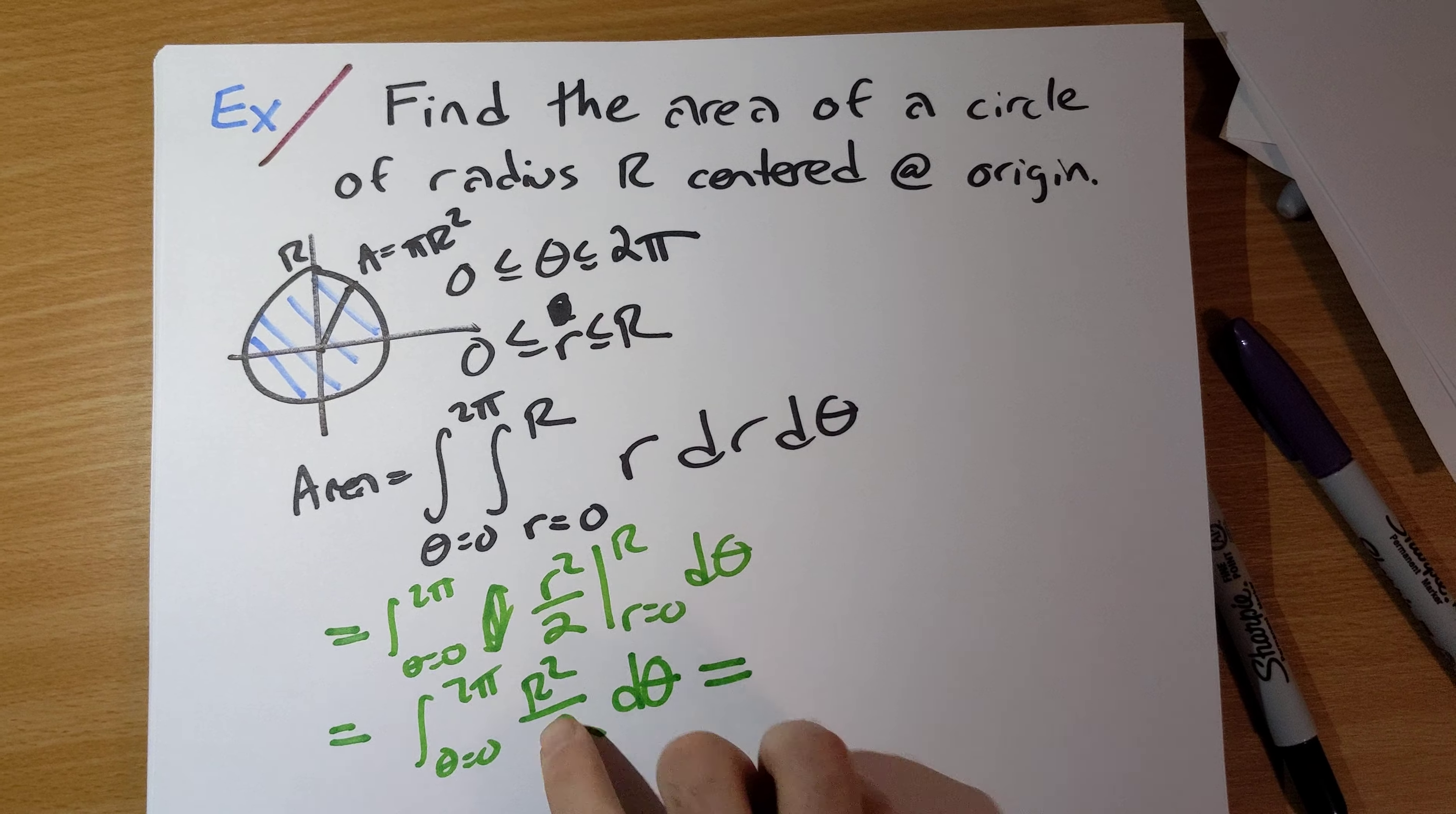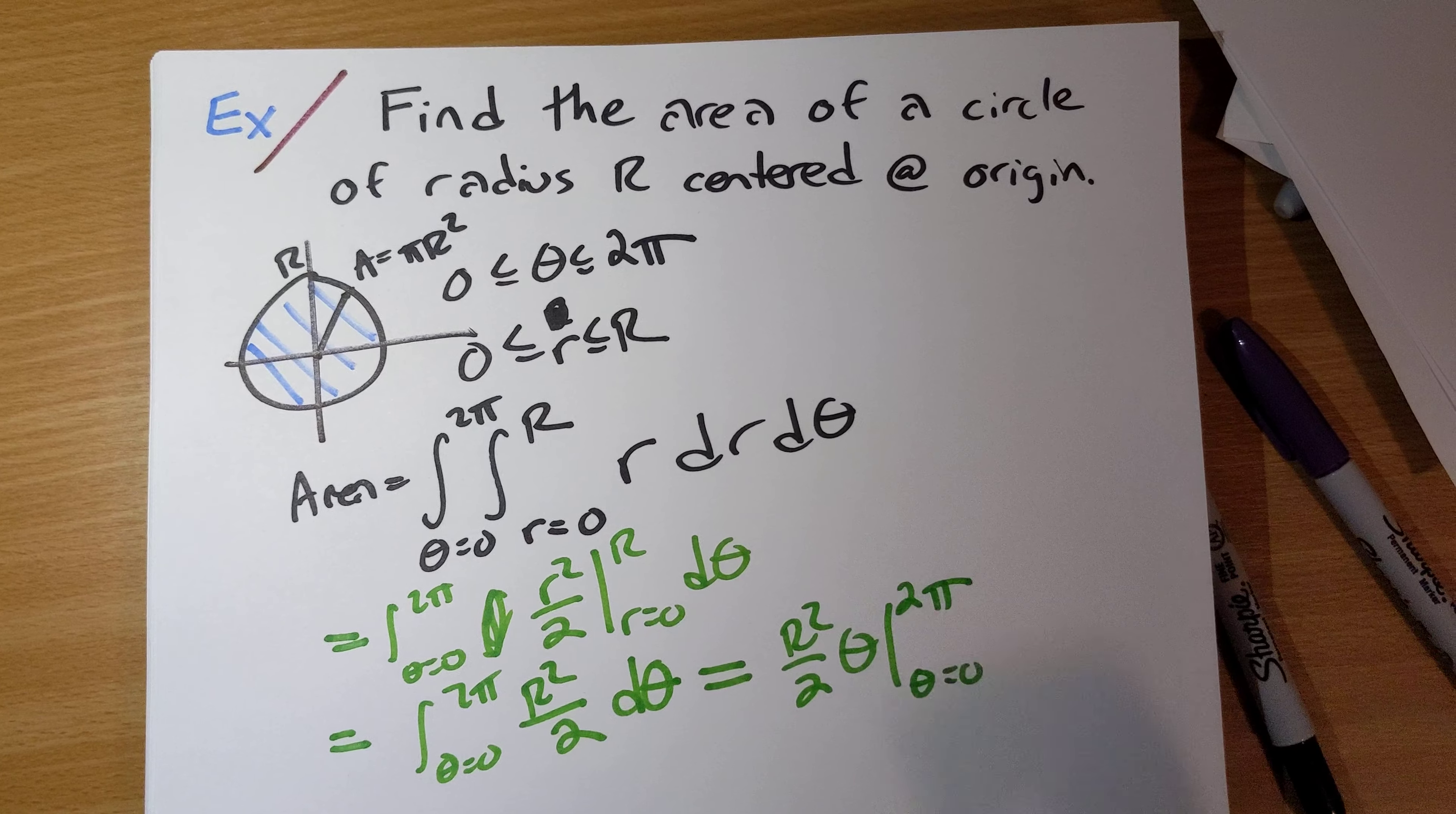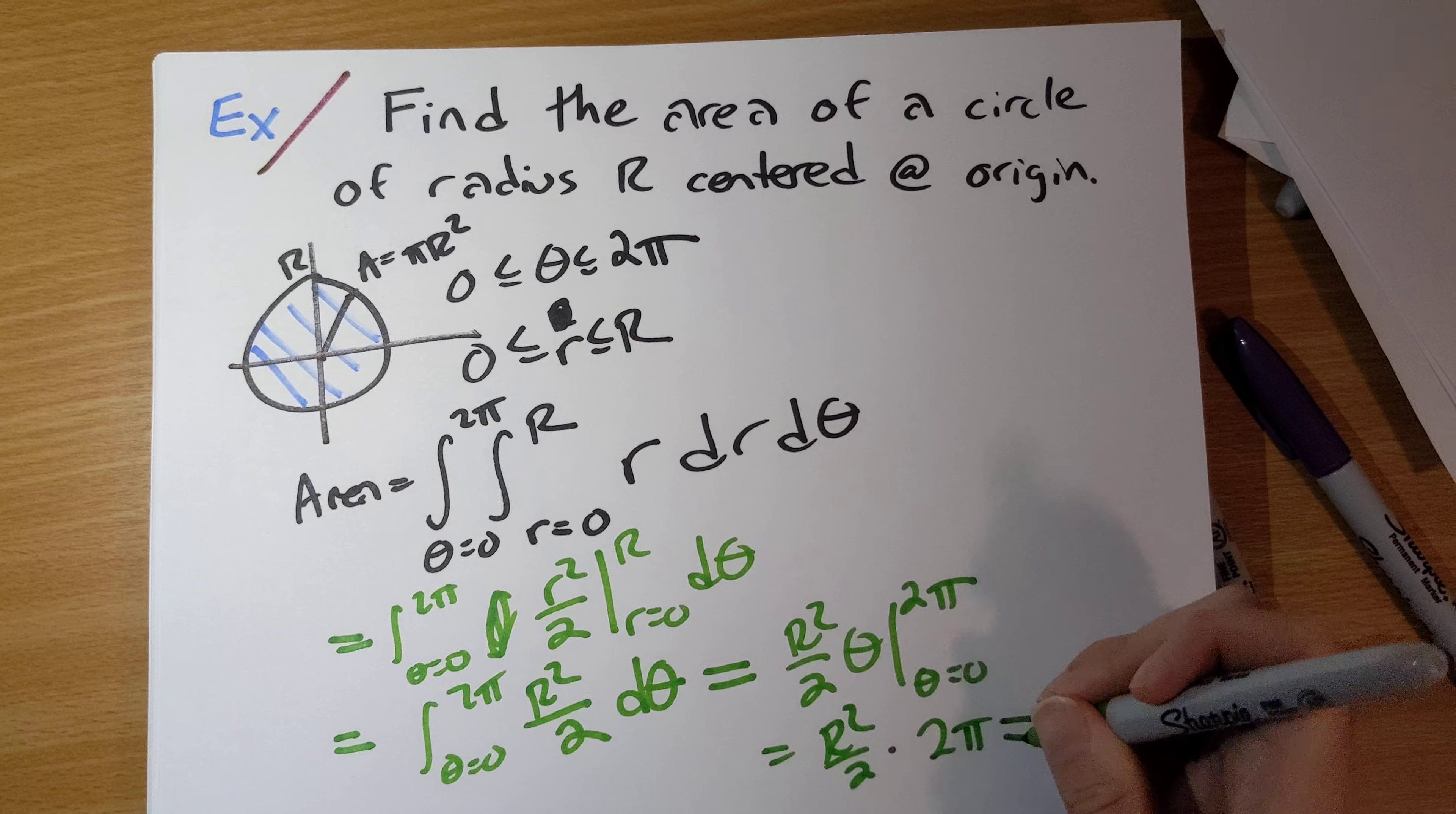Big R squared is a constant. And so the antiderivative of this will be big R squared over 2 times θ. Plug in θ from 0 to 2π. And what do we end up with? R squared over 2 times 2π. And yes, this is exactly what we'd expect: π R squared.